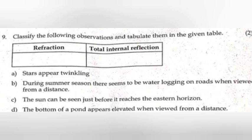9. Classify the following observations and tabulate them in the given table. Refraction, total internal reflection. Answer: Refraction - A. Stars appear twinkling. C. The sun can be seen just before it reaches the eastern horizon. D. The bottom of a pond appears elevated when viewed from a distance. Total internal reflection - B. During summer season, there seems to be water logging on roads when viewed from a distance.